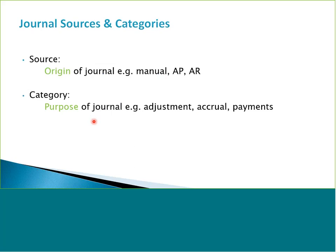So let's look at journal sources and categories. What are journal sources? A journal source is a feature of journals that tells us the origin of a journal — how the journal was created or from where it came. So the journals we've been entering for our general ledger, the source of those is manual because we've been entering them manually. And then we might have journals that come from other sub-ledgers, such as accounts payable or accounts receivable. When those journals are imported into GL, you will see the source indicated on the journal showing where it came from.